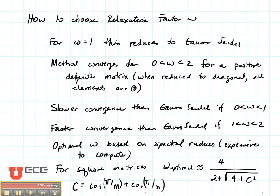This method converges for a positive definite matrix. That means that when the matrix is reduced to diagonal elements only, all the elements are positive.